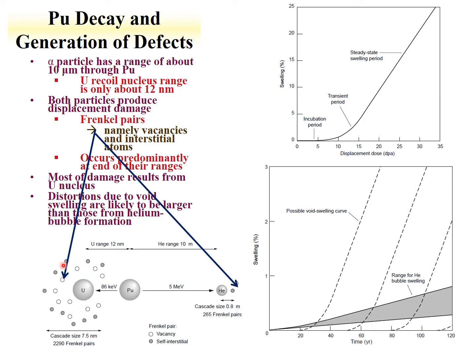Here's an example of Frenkel pairs. We have vacancies and interstitials — vacancies are holes where an atom should be, and an interstitial is an atom sitting in a place where it shouldn't be. These pairs are formed and coalesce together. There's a smaller amount of energy and shorter range, but many more Frenkel pairs — about an order of magnitude more — are produced from the uranium recoil.